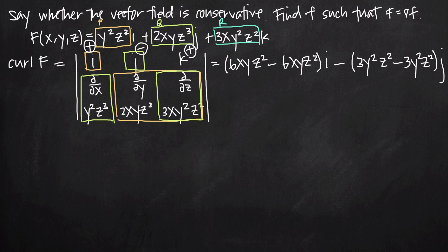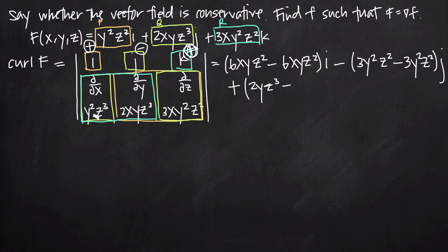For the k coefficient, we have a positive sign and look at everything outside k's row and column. Upper-left times lower-right gives the partial derivative with respect to x of 2xyz³, which is 2yz³. We subtract the partial derivative with respect to y of y²z³, bringing the exponent down to get 2yz³. So the k coefficient is 2yz³ − 2yz³.